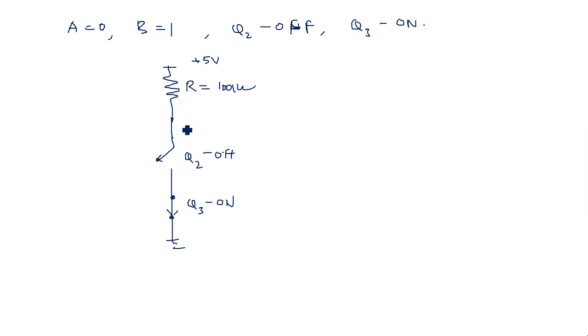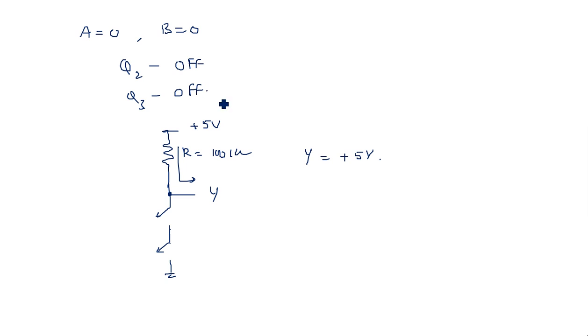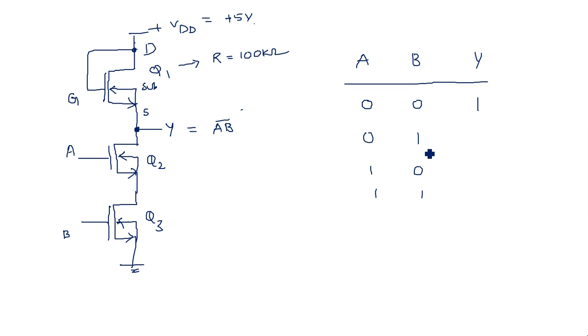Since Q2 is OFF, the series path to ground is broken. The output is still equal to plus 5 volts because the current has a direct path to the output. So the output is again logic 1.